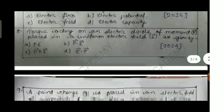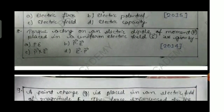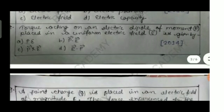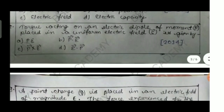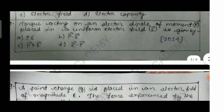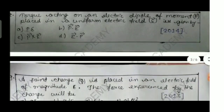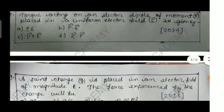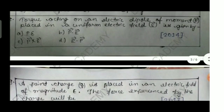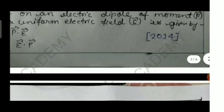Question number eight: the torque acting on an electric dipole of moment p placed in a uniform electric field E is given by — option A: pE, option B: p·E (dot product), option C: p×E (cross product), option D: E·p. This is from 2014.